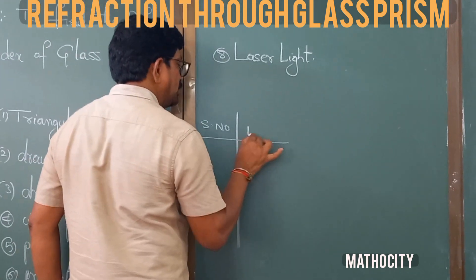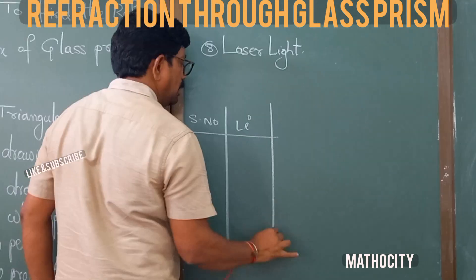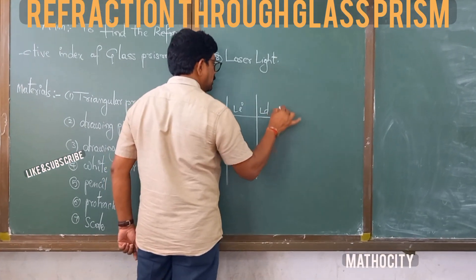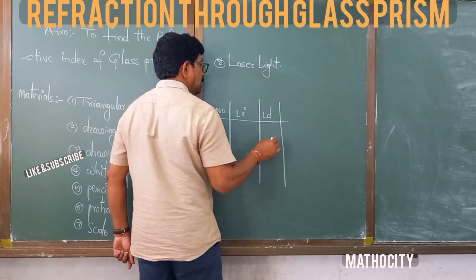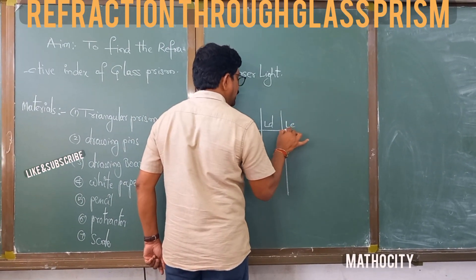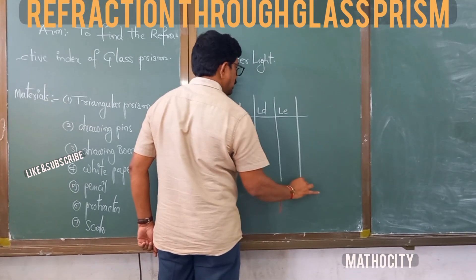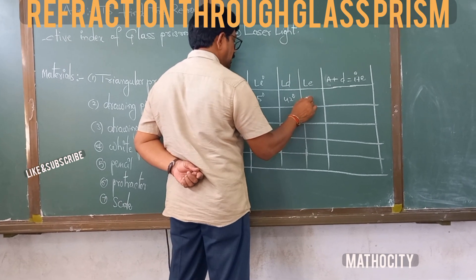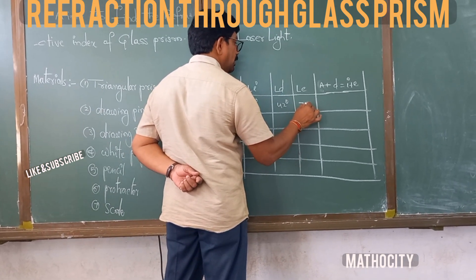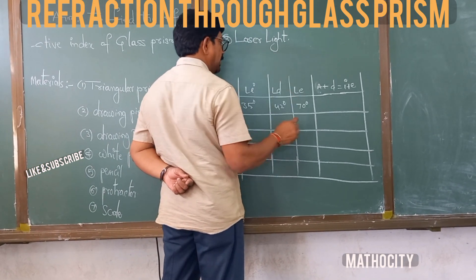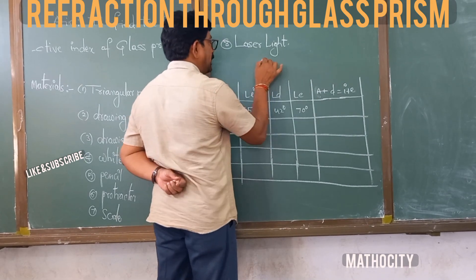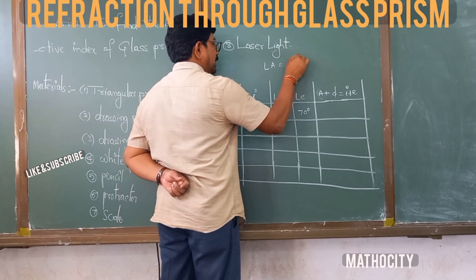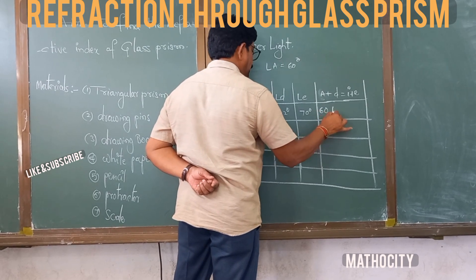Now let us record all values in the table: angle of incident, angle of deviation, angle of emergent, and angle of refraction. The angle of prism A is equal to 60 degrees.